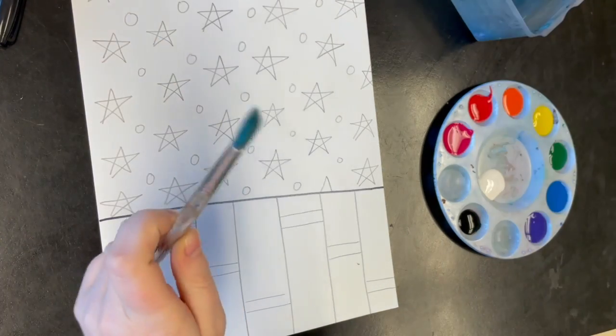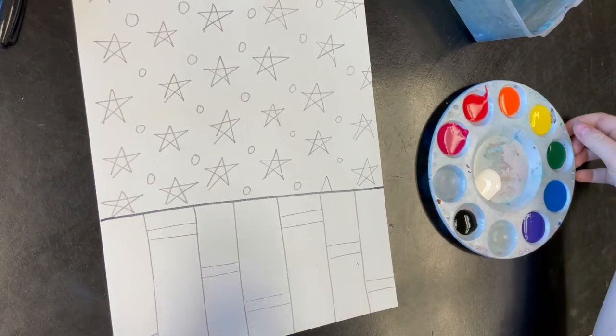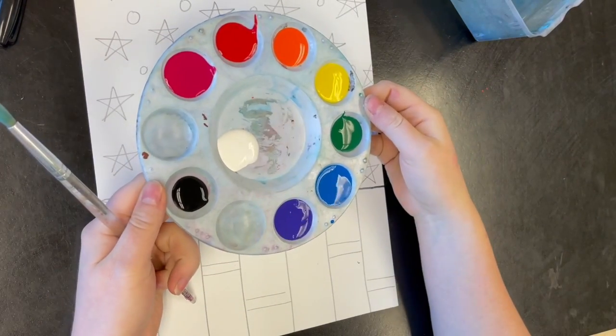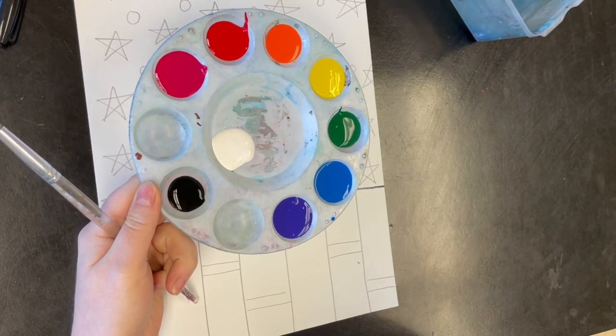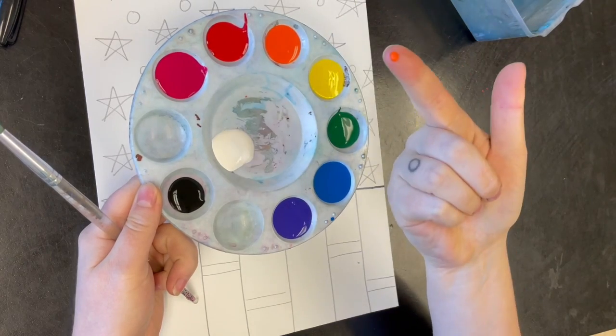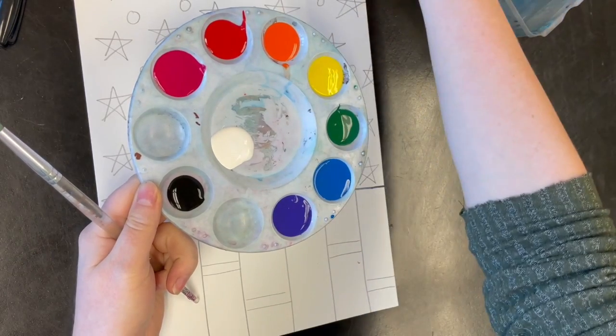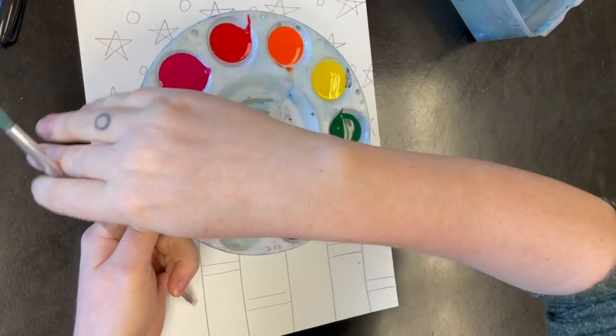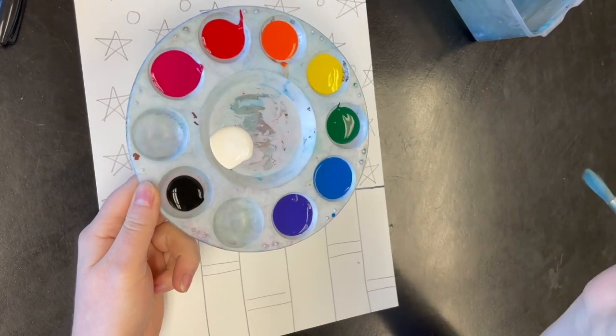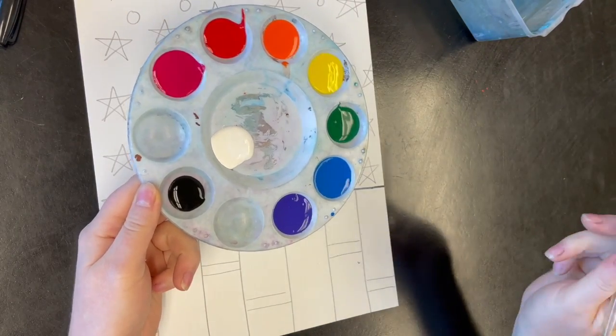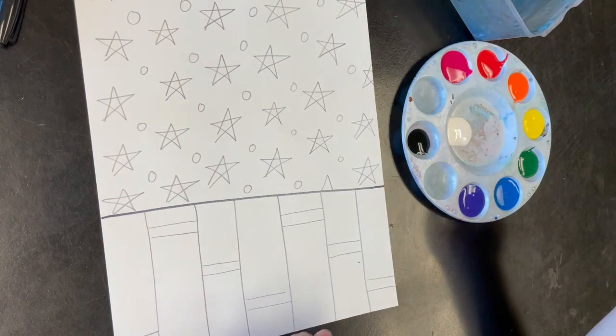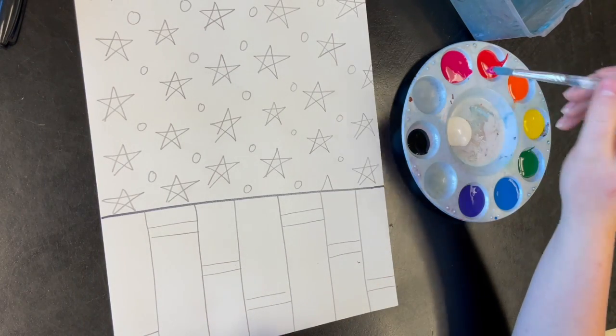This paint, unlike watercolor paint, you don't have to add anything to it to work—it's already wet, it's already paint. Use the water and paper towels to clean your paintbrush off between colors. You could do any colors you want.